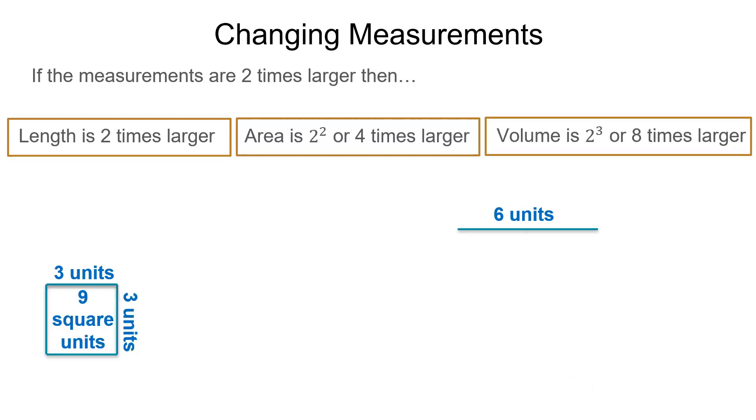For area, if the original area is 9 square units, if the dimensions are doubled, then the new area would be equal to 36 square units, which is 4 times larger.